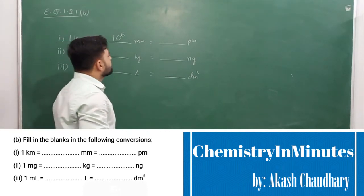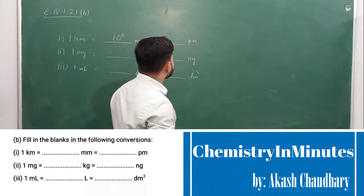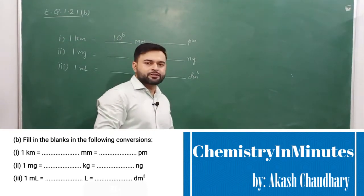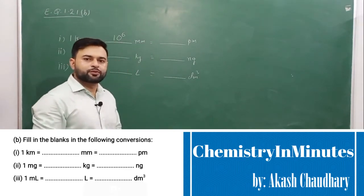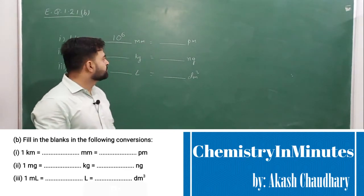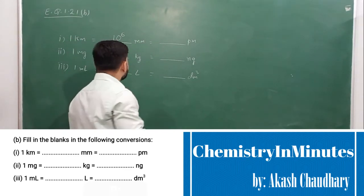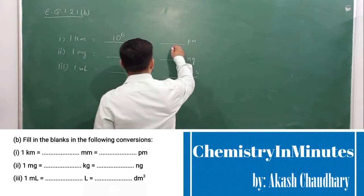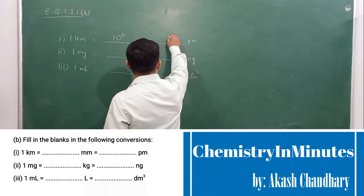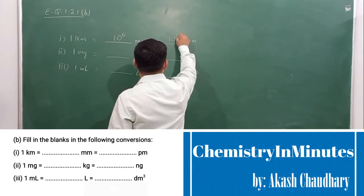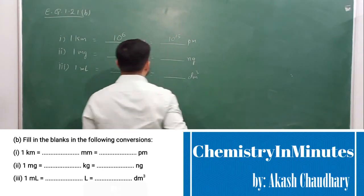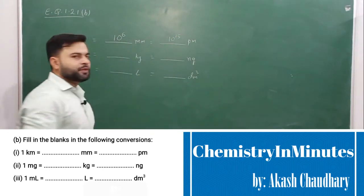Now, picometers. 10 raised to the power 12 picometers is equal to 1 meter, and then it will be multiplied by 1000. So this will come as 10 raised to the power 15 picometers.